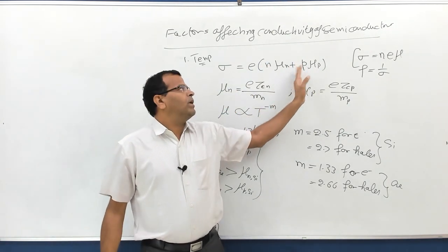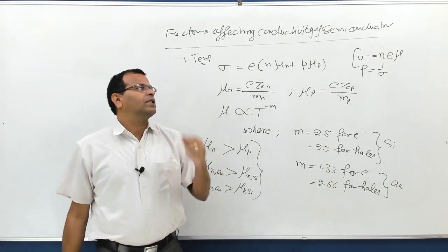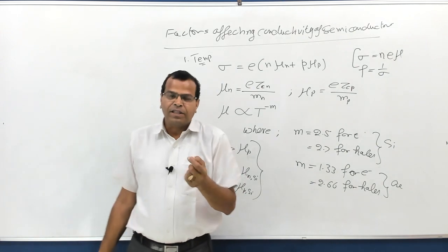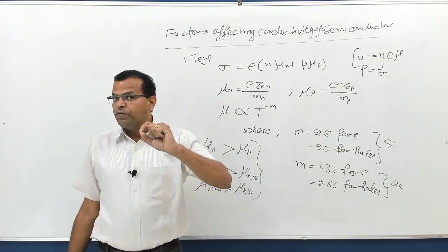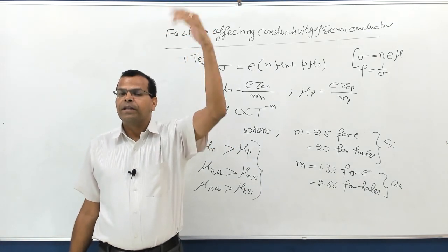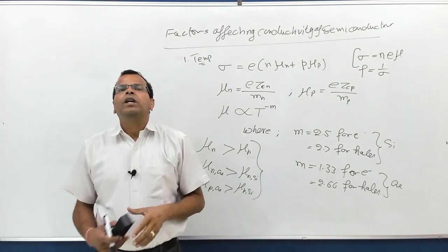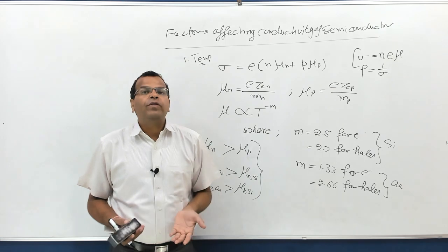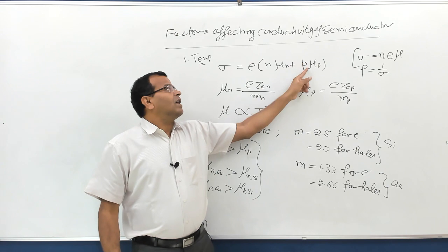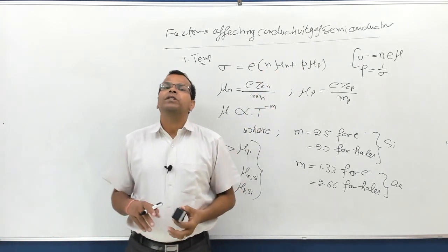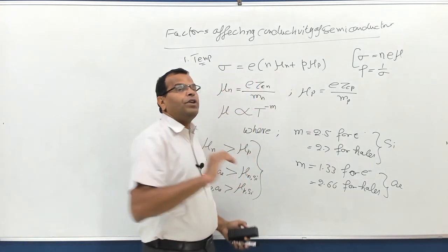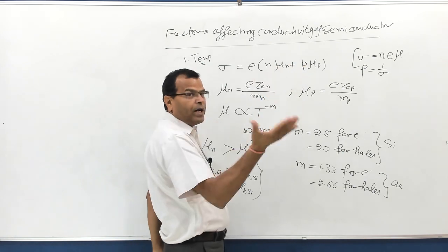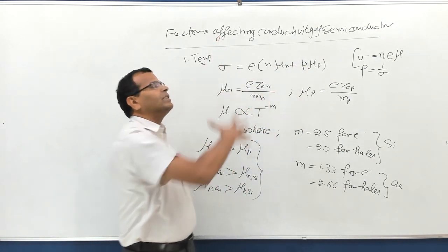In semiconductors, μn and μp reduce with increase in temperature. But there is generation of electron-hole pairs in semiconductors — if you supply energy, electrons from the valence band jump to the conduction band; that is intrinsic generation. Because of the increase in concentration, there will be an increase in conductivity. However, when temperature increases, mobility decreases but concentration increases. Because the increase in charge carrier concentration is dominant over the decrease in mobility, there is a net increase in conductivity.